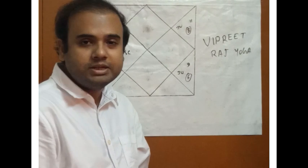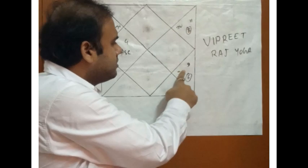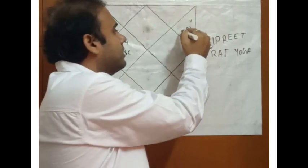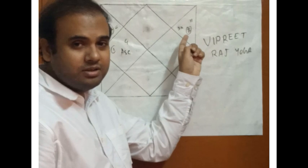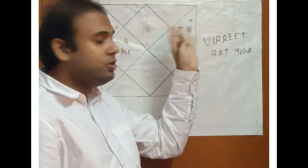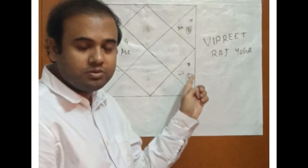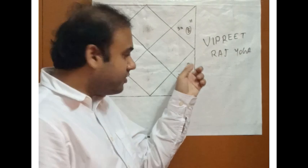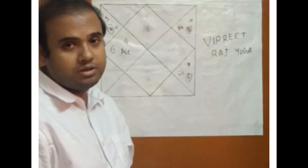Suppose you are a Cancer ascendant and this house is Sagittarius. So who is the sign lord? Jupiter, right. Suppose Jupiter is sitting here or here or here. It will become a Vipreet Raj Yoga. Why? If Dusthana di Pati sits in its own house or in any of the Dusthana houses, like if it is the 6th lord according to your ascendant, it sits in 6th itself or 8th or 12th.